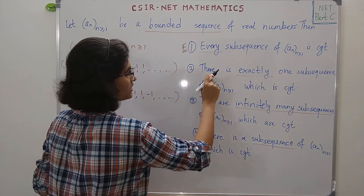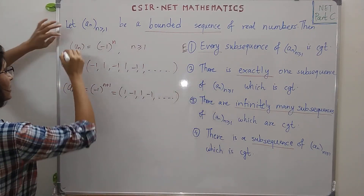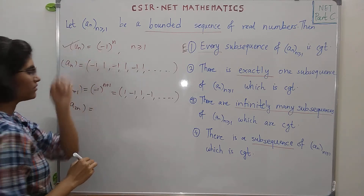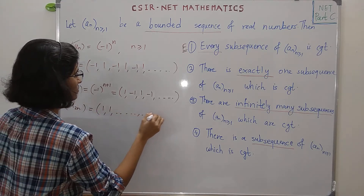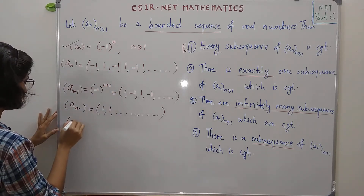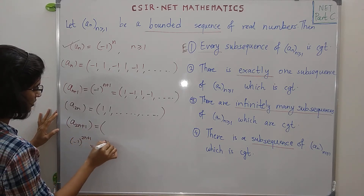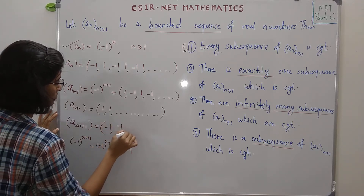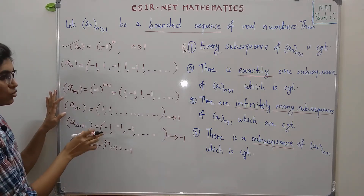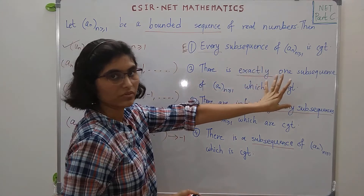For the second option — there is exactly one convergent subsequence — again take Aₙ = (−1)ⁿ. The subsequence A₂ₙ = (−1)²ⁿ = 1 is the constant sequence 1, 1, 1, ... which converges to 1. And A₂ₙ₊₁ = (−1)²ⁿ⁺¹ = −1 is the constant sequence −1, −1, −1, ... which converges to −1. So there are two convergent subsequences, but option 2 says exactly one. So option 2 is also false.